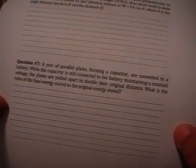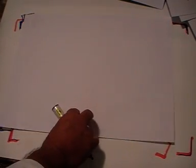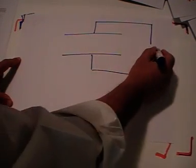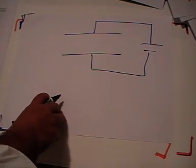That's question six. Question number seven — I did not cover everything in class but it's a good chance for us to go over these things together. We have a parallel plate capacitor connected to a battery. While the capacitor is still connected, maintaining a constant voltage, the plates are pulled apart to double their original distance. What is the ratio of the final energy to the original energy stored in the capacitor?